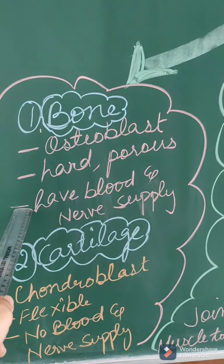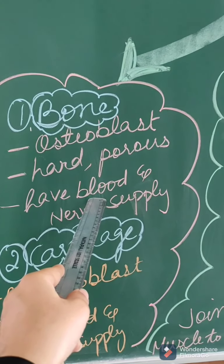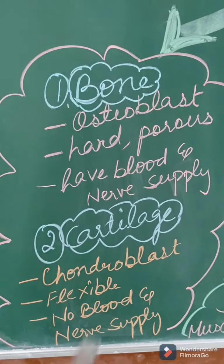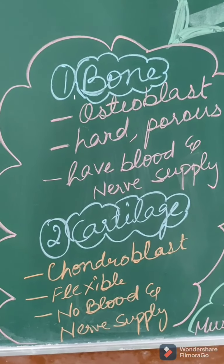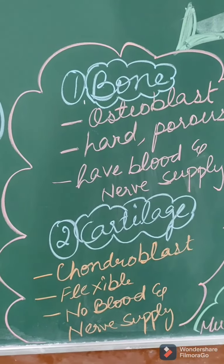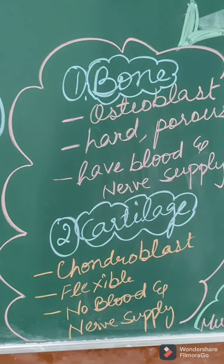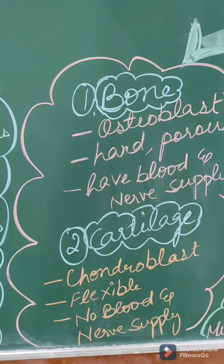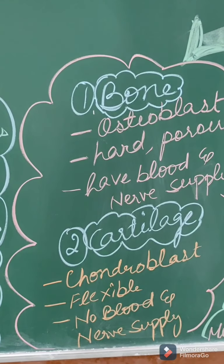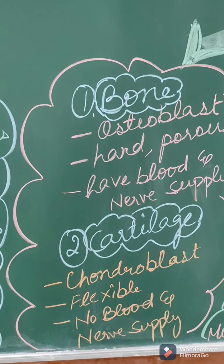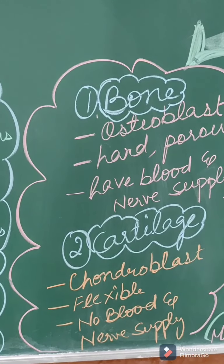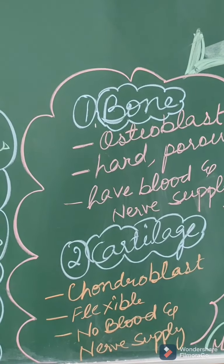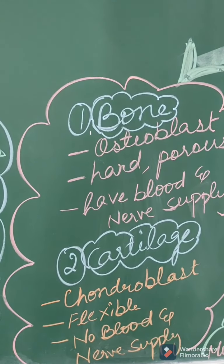Inside the bone, blood supply and nerve supply are also present. In cartilage, it is made up of chondroblasts — chondroblast means cartilage cell. Cartilage is flexible, but inside cartilage there is no blood supply and no nerve supply. The tip of your nose or your external ear all have cartilage inside.